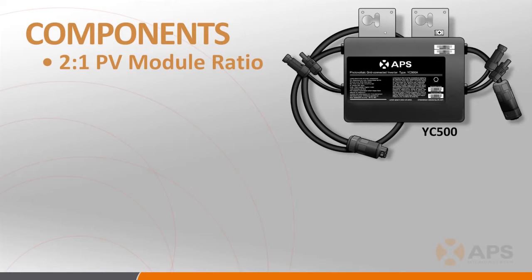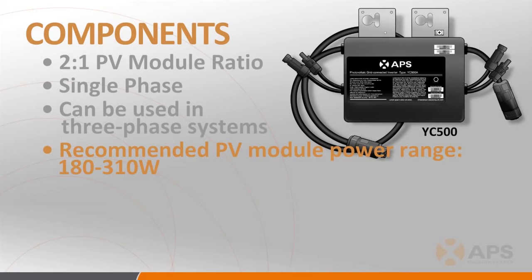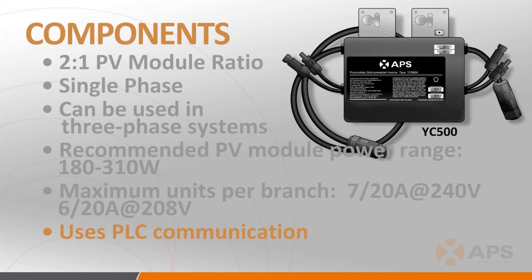The APS YC500 functions as two inverters built into a single case and has the following characteristics. It's a single-phase inverter, but given its architectural flexibility, it can also be used in both 208-volt and 277-480 3-phase applications. It is best suited for PV modules in the 180-310 watt range, and its total rated output power is 500 watts. The maximum number of units per 120-240 volt, 20-amp circuit is 7, or a total of 14 PV modules, and the maximum number of units per a 208-volt, 20-amp circuit is 6, or a total of 12 PV modules. The YC500 uses the Powerline Communication, or PLC, protocol to communicate with the ECU, and while the warranty varies depending on pricing, it has been engineered for a design life of 25 years.